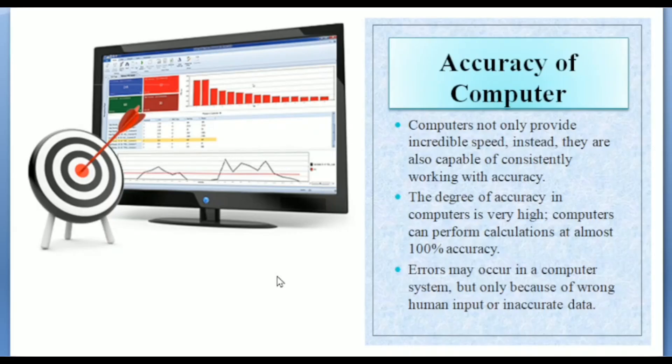Next is accuracy of computer. Computers not only provide incredible speed, but they are also capable of consistently working with accuracy. The degree of accuracy of computers for calculations is almost 100% accurate. Errors may occur in computer system but only because of wrong human input or inaccurate data.